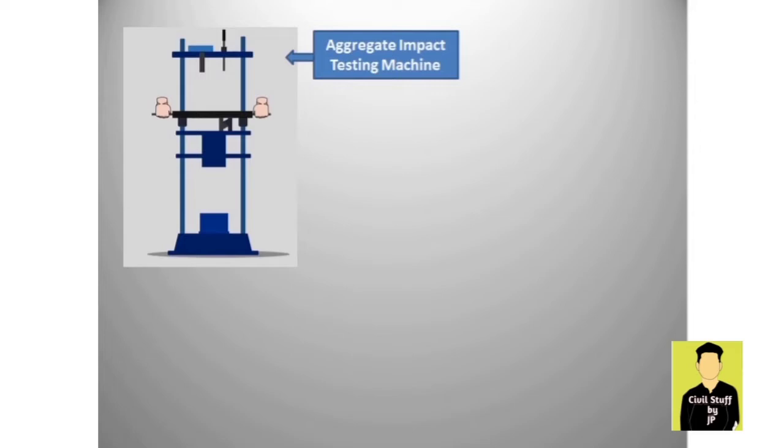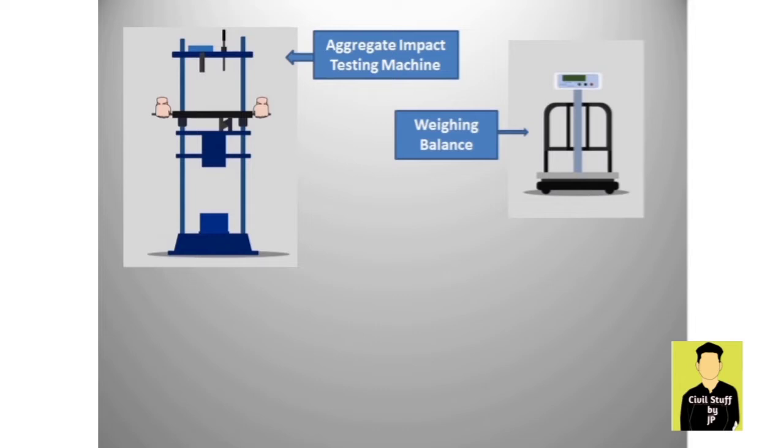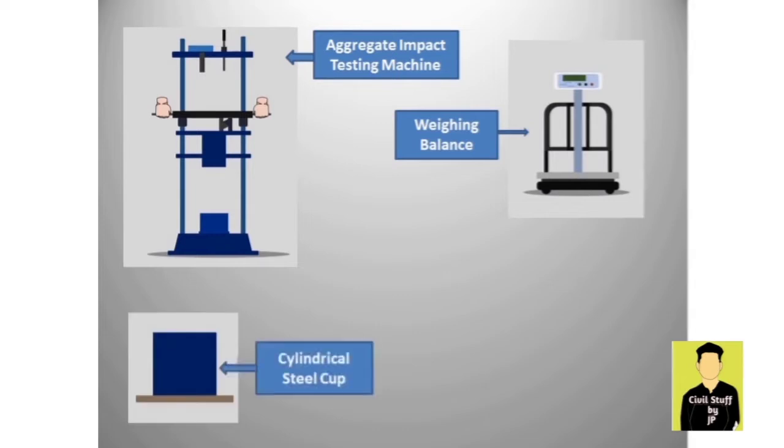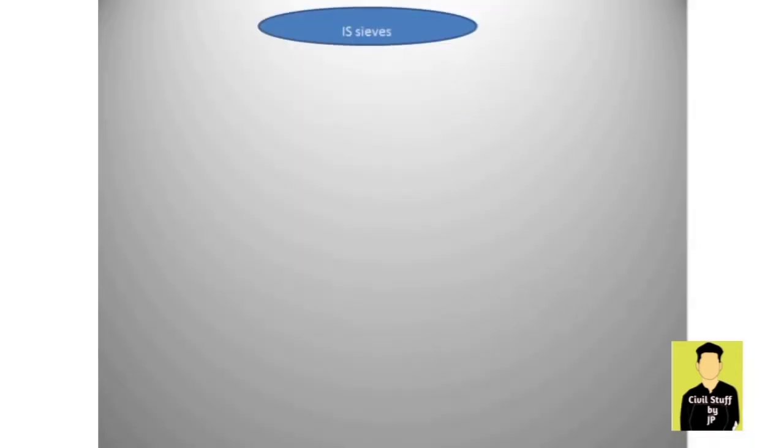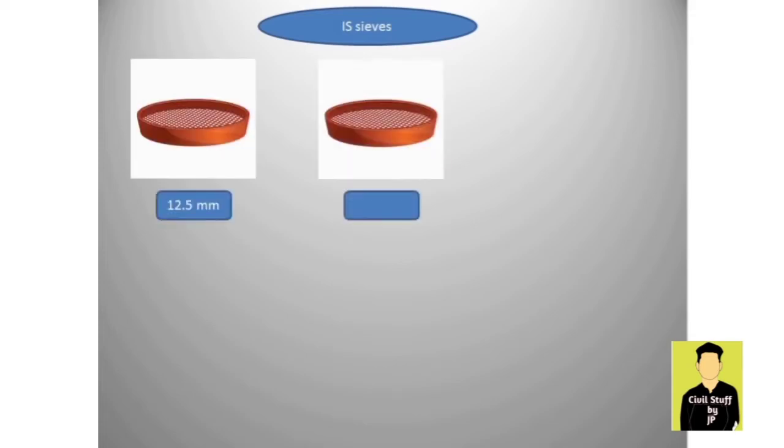Aggregate impact testing machine, weighing balance, cylindrical steel cup, cylindrical measure, tamping rod, IS sieves of size 12.5mm, 10mm, and 2.36mm.